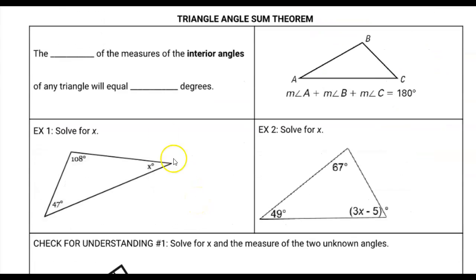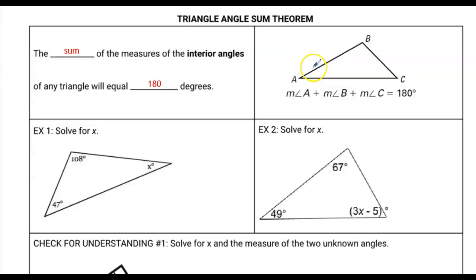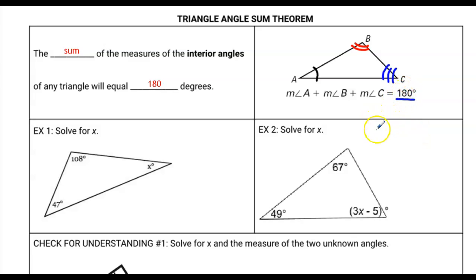Moving right along, we'll talk about the triangle angle sum theorem, commonly known as just the triangle sum theorem. It states that when you take the interior angles of any triangle and add them together, it will always equal the same thing — 180 degrees. That means all of the interior angles of a triangle, whether it's acute, obtuse, right, equilateral, or isosceles, will always sum to 180 degrees. This is one of the most basic theorems in geometry that we'll be using over and over again.